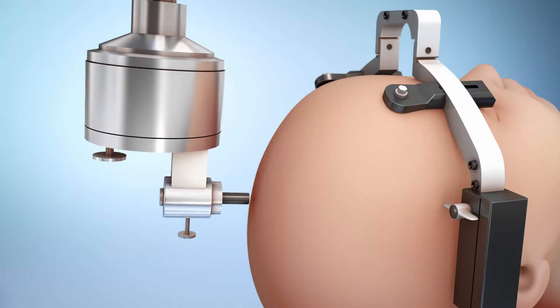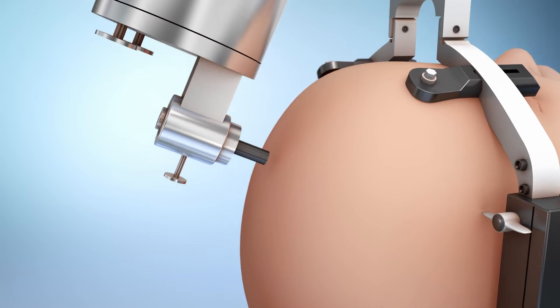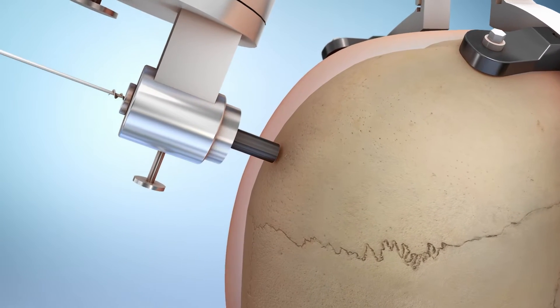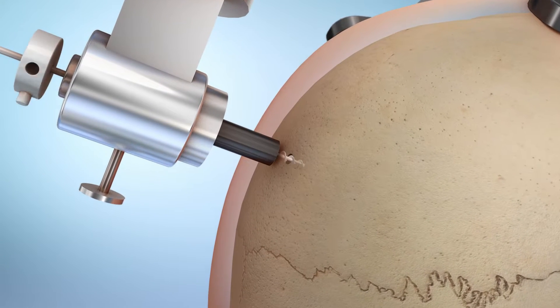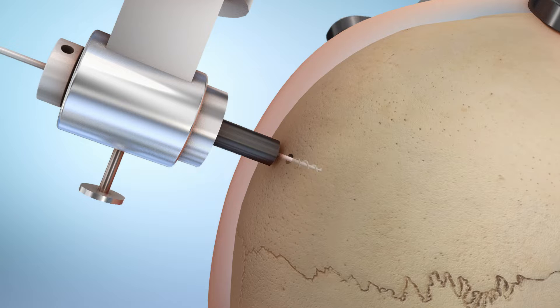Next, the robot will move to the precise spot to place the first electrode. Using the robot arm as a guide, the surgeon will make a tiny hole in the skull.